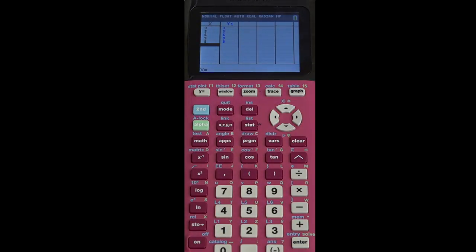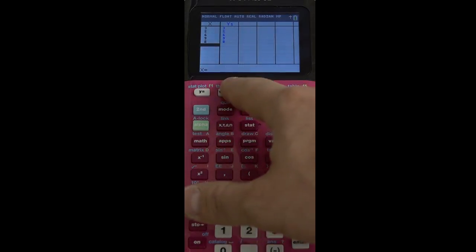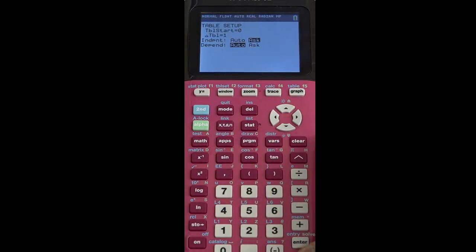If you just want to have a big list to scroll through, which is usually what we're doing in math class as opposed to science, then it's probably more useful to you to just have everybody on auto, but then pick useful increments for things to walk by. So those are some of the basics of y equals, of window, of table set, and of table.